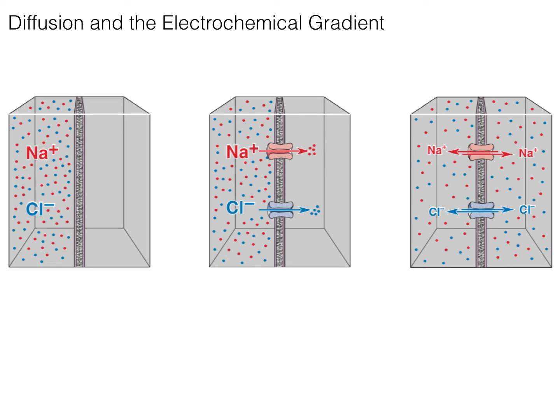However, unlike simple diffusion, there is an element of charge involved, and as ions move down their concentration gradient, the overall charge will begin to repel other like charges, until we reach electrochemical equilibrium.